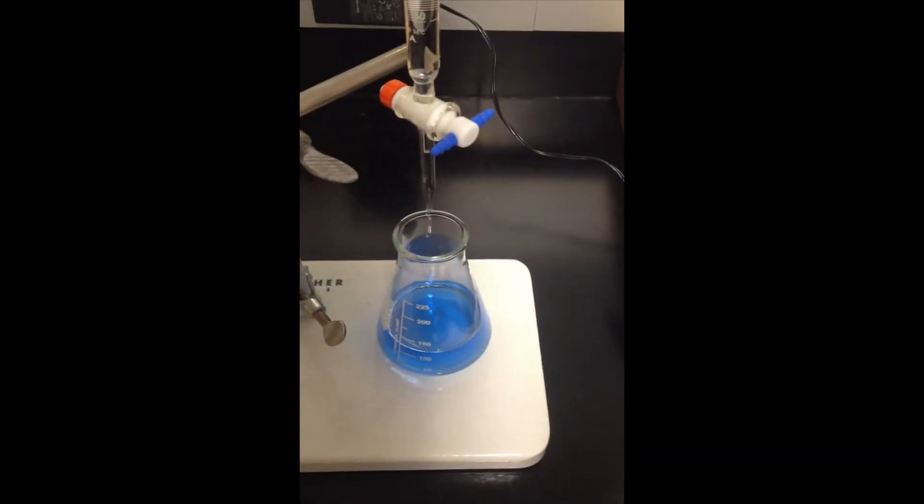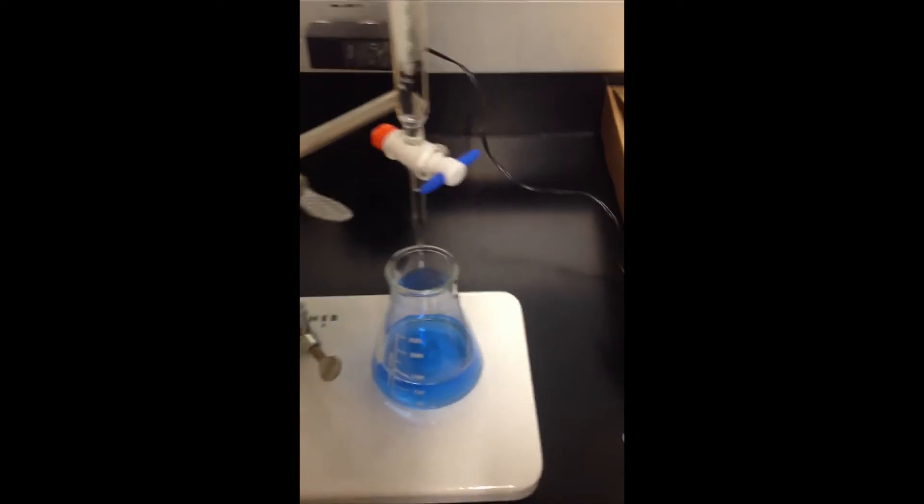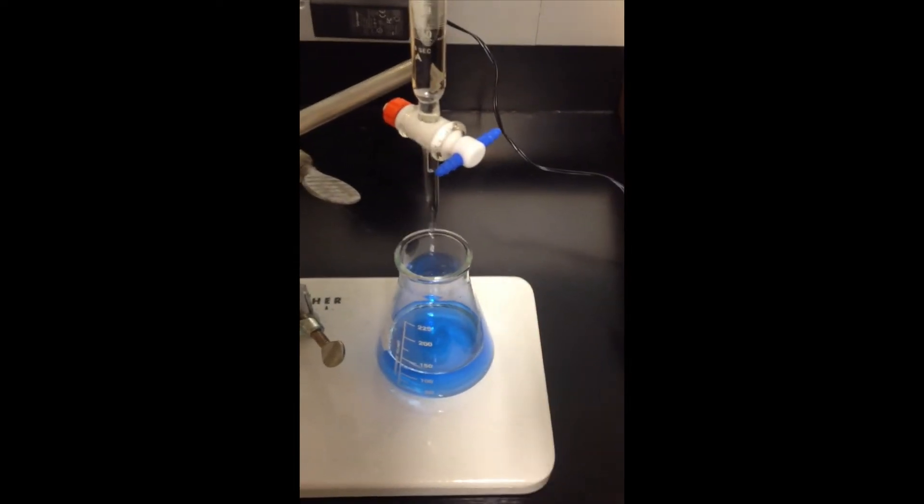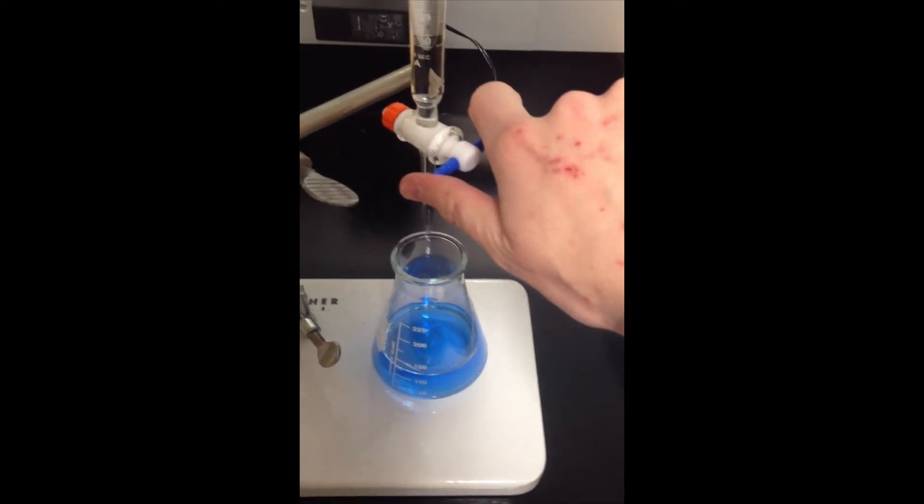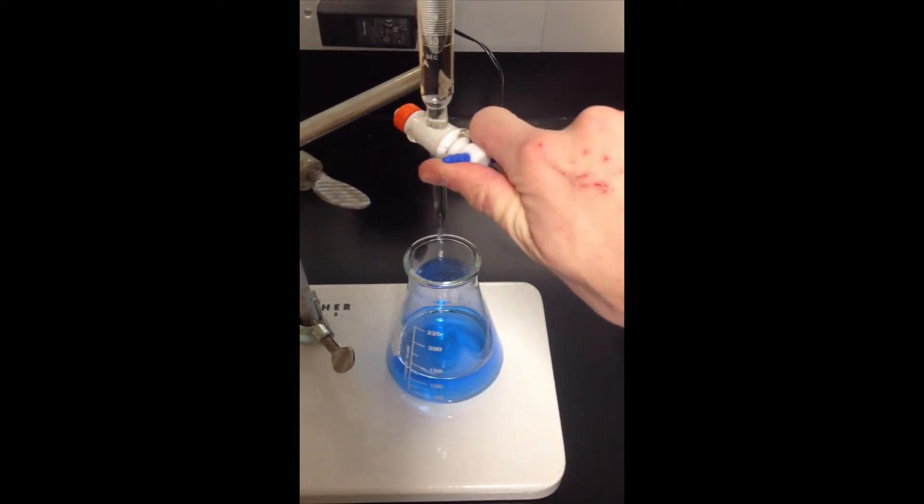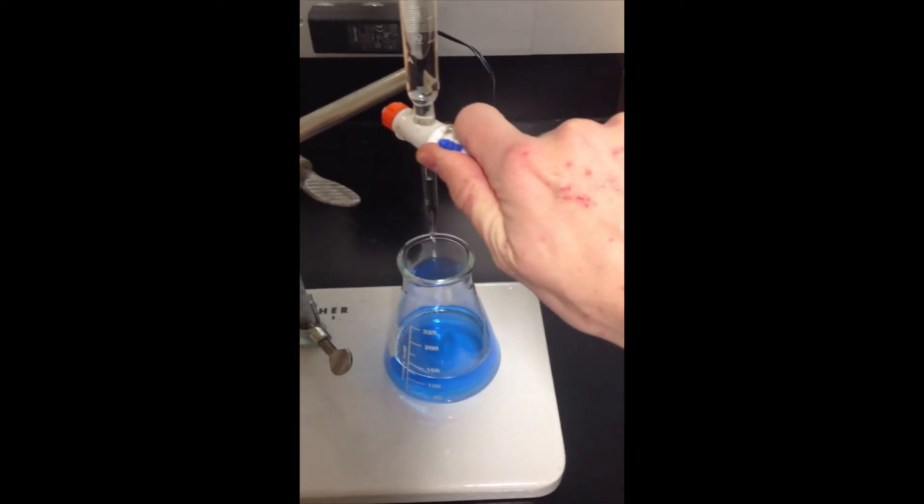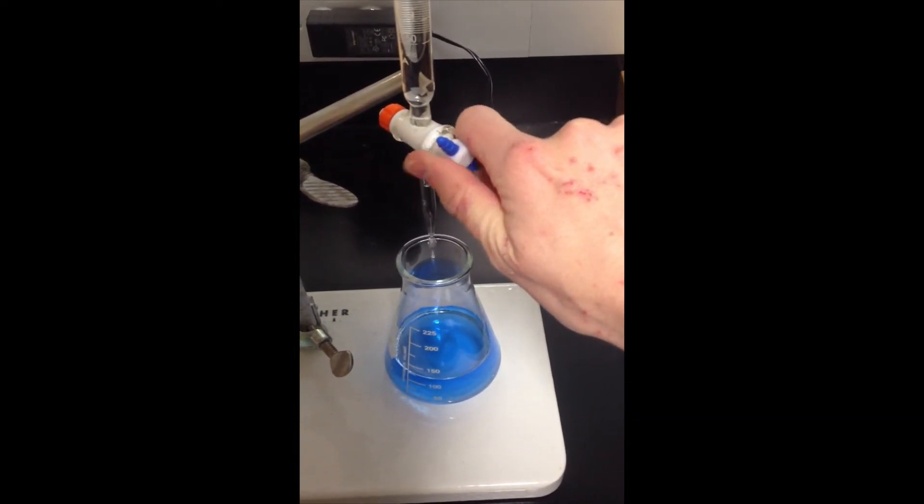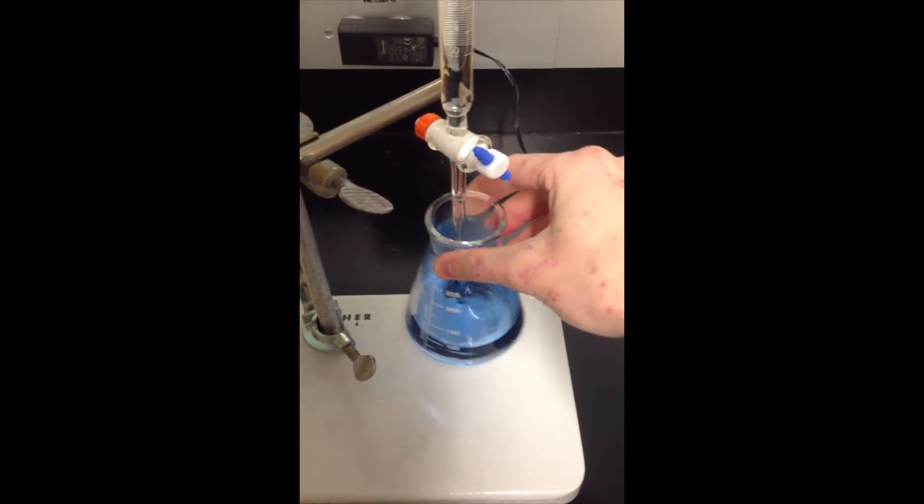All right, so we're just about ready to start the standardization. I've got the HCl on the zero mark. I've recorded that, recorded the number of drops and mass, the number of drops of Bromocresol green and the mass of sodium carbonate. So I'm going to go ahead and just turn the stopcock until we get a nice steady drop flow there, and you'll want to swirl this around gently.